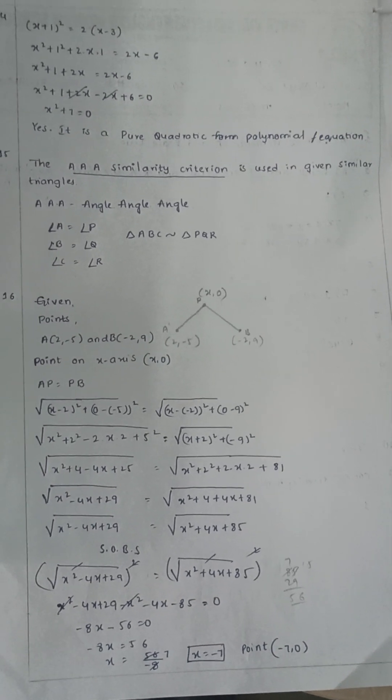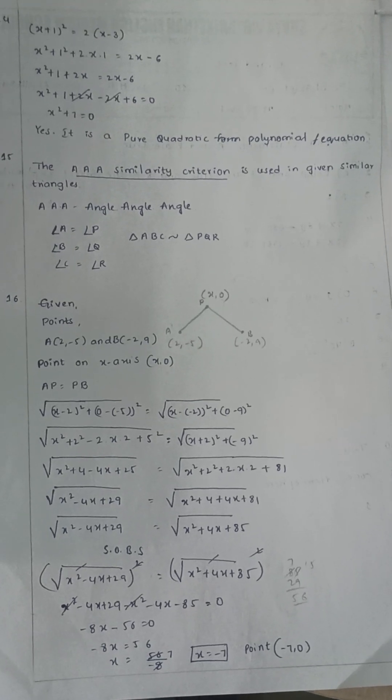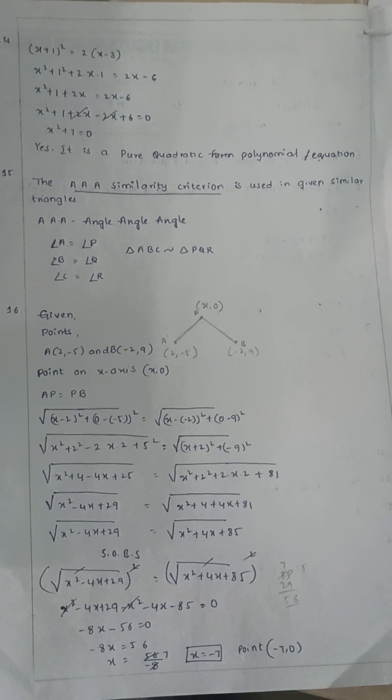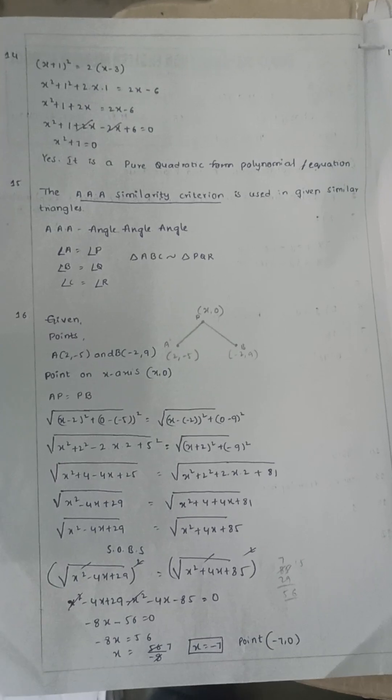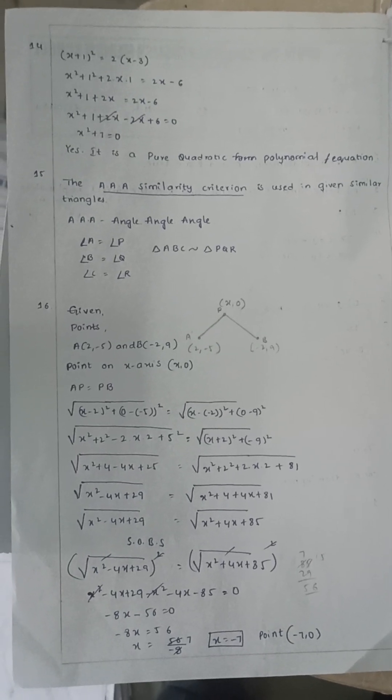Sixteenth question: find a point equidistant from two points A and B. Using the distance formula, the required point is (7, 0) or (−7, 0).